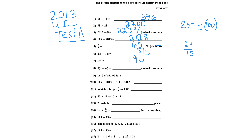Number 8: 3 fourths minus 2 thirds is 9 twelfths minus 8 twelfths, which is 1 twelfth. And 5 minus 4 is 1. If you have trouble with 3 fourths minus 2 thirds, you can do a cross product: 3 times 3 is 9, and 4 times 2 is 8, so 9 minus 8 is 1. Then 4 times 3 is 12 — there's your 1 twelfth.